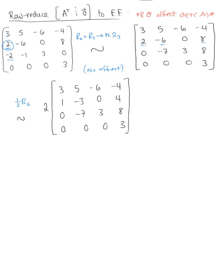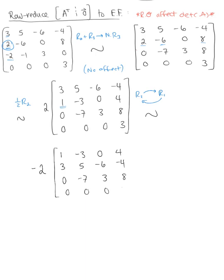Now that we have a 1 in the first position of row 2, we interchange row 2 with row 1, placing row 1 in row 2's position. Since we are interchanging rows, we multiply the matrix by negative 1 for the determinant. So we now have negative 2 multiplied by: row 1 is 1, negative 3, 0, 4; row 2 is 3, 5, negative 6, negative 4; row 3 is 0, negative 7, 3, 8; row 4 is 0, 0, 0, 3.